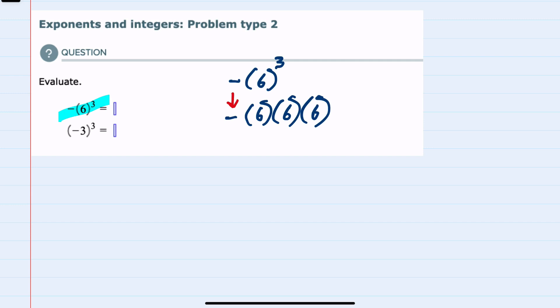We can now evaluate this multiplication. Again bringing down the negative, we would multiply 6 times 6 times 6, which would give us 216, or 36 times 6. Here our solution is negative 216, as we were just bringing it down after doing the multiplication.